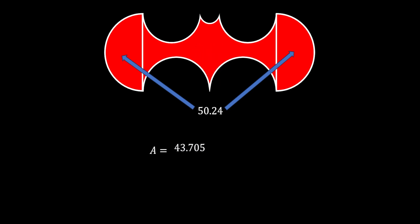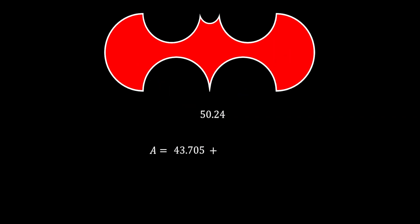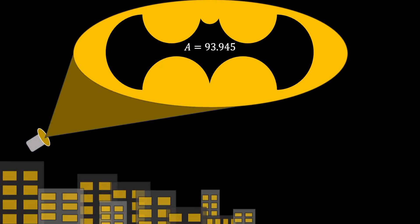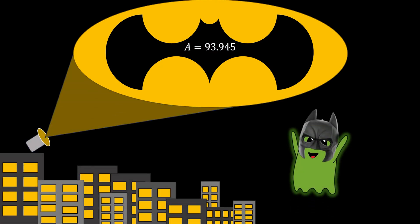All that's left is to add the two areas together: 43.705 + 50.24, giving an overall bat wing area of 93.945. I hope you enjoyed this video — if you did, give it a like or subscribe to the channel. Until next time, take care!